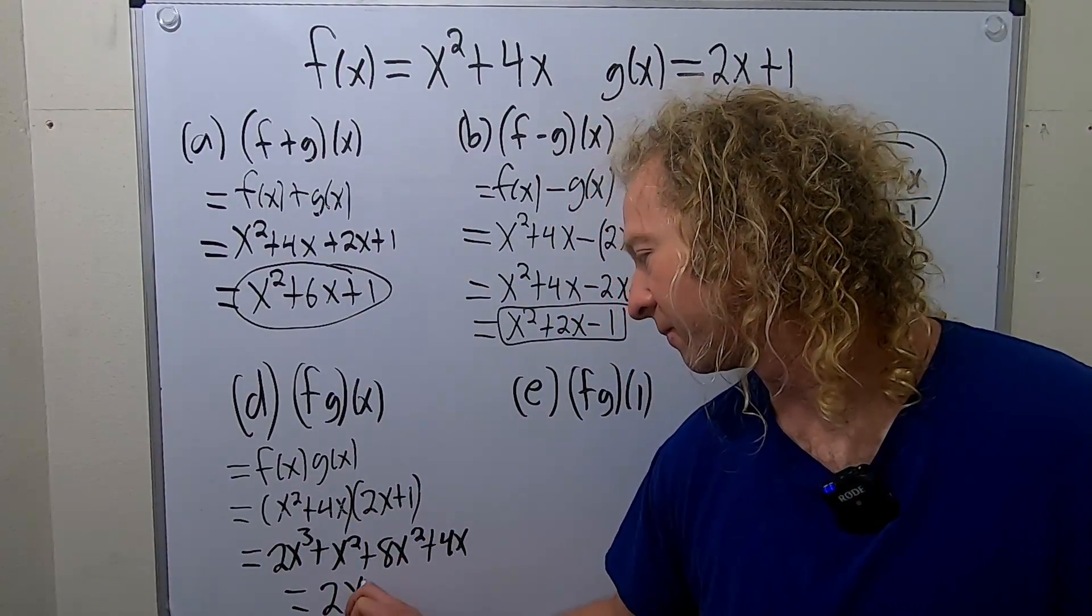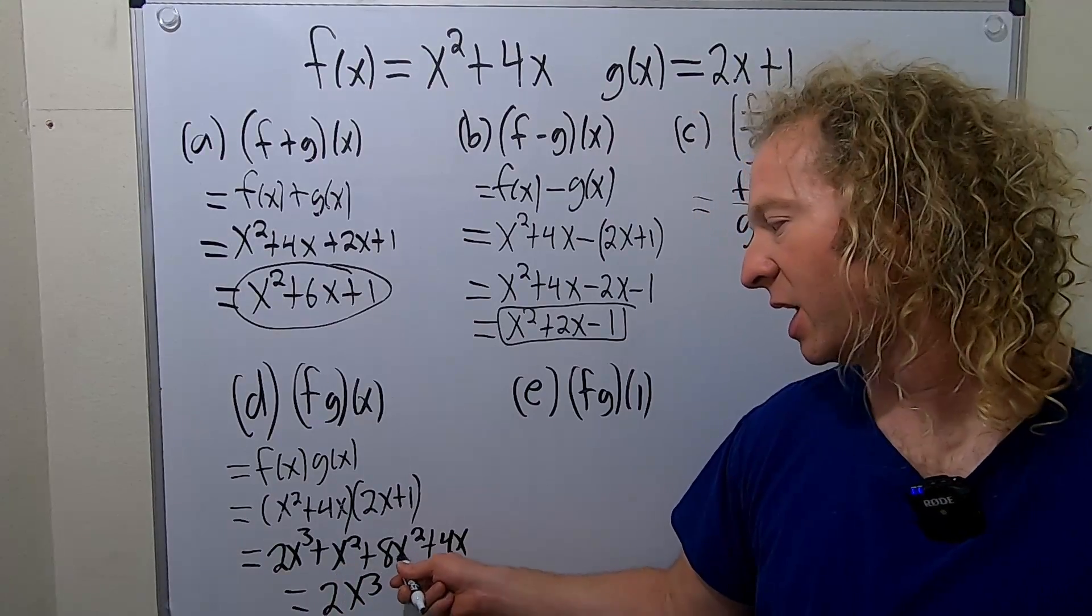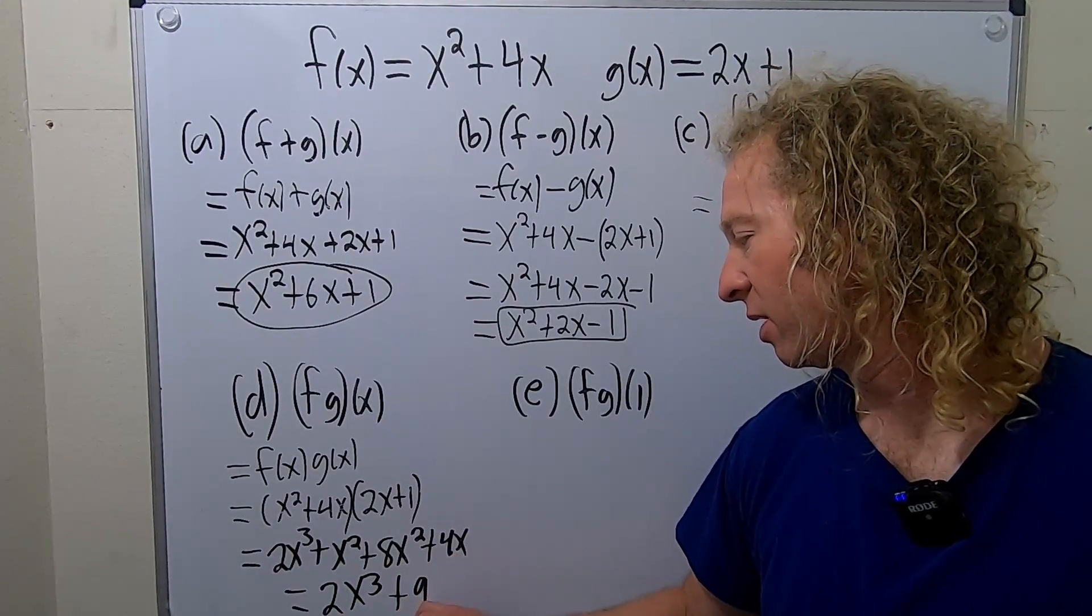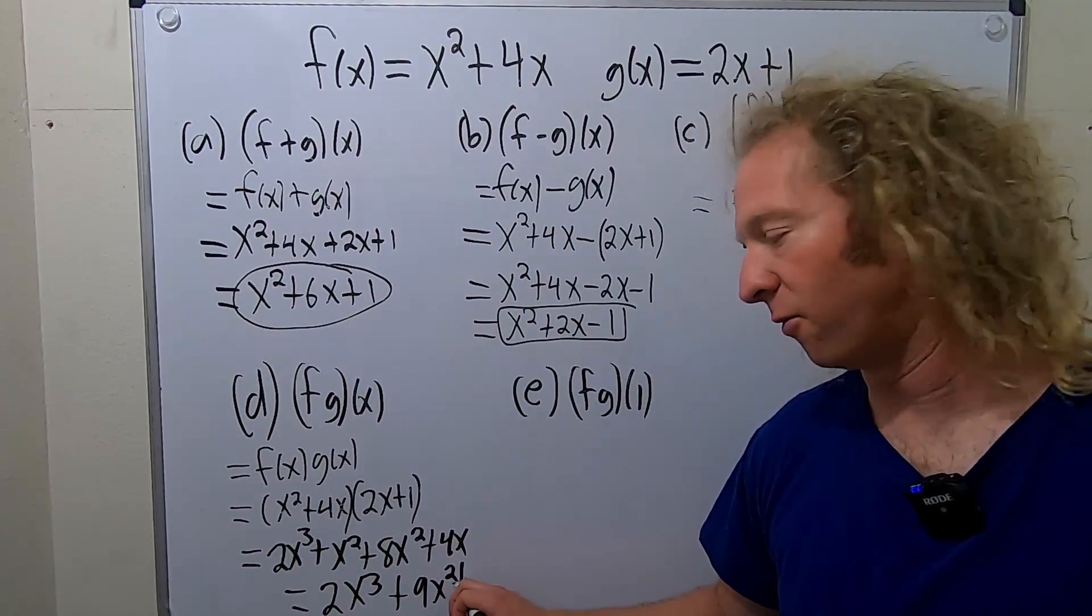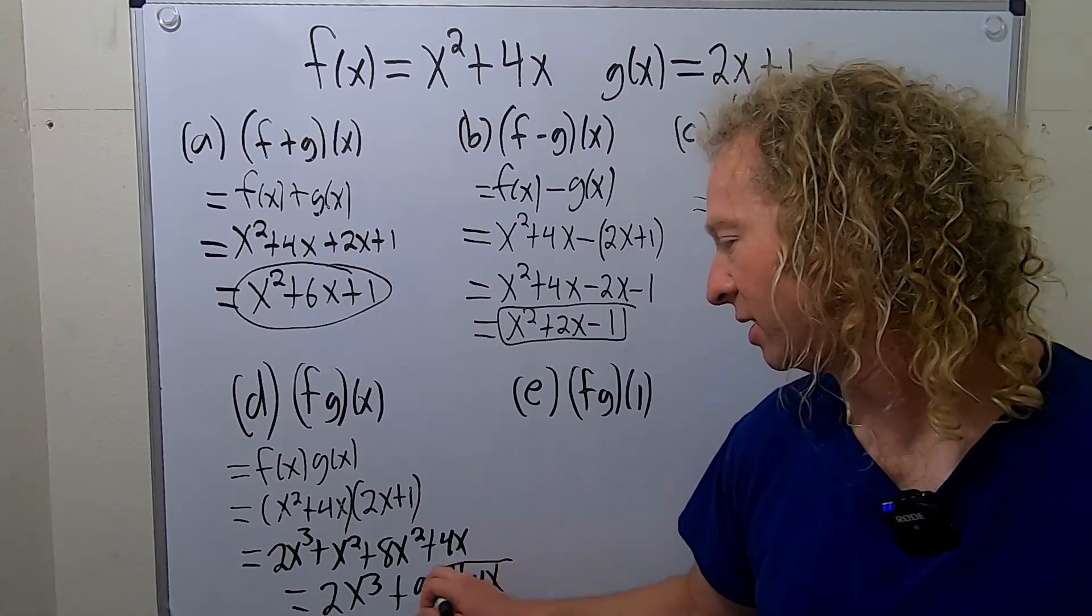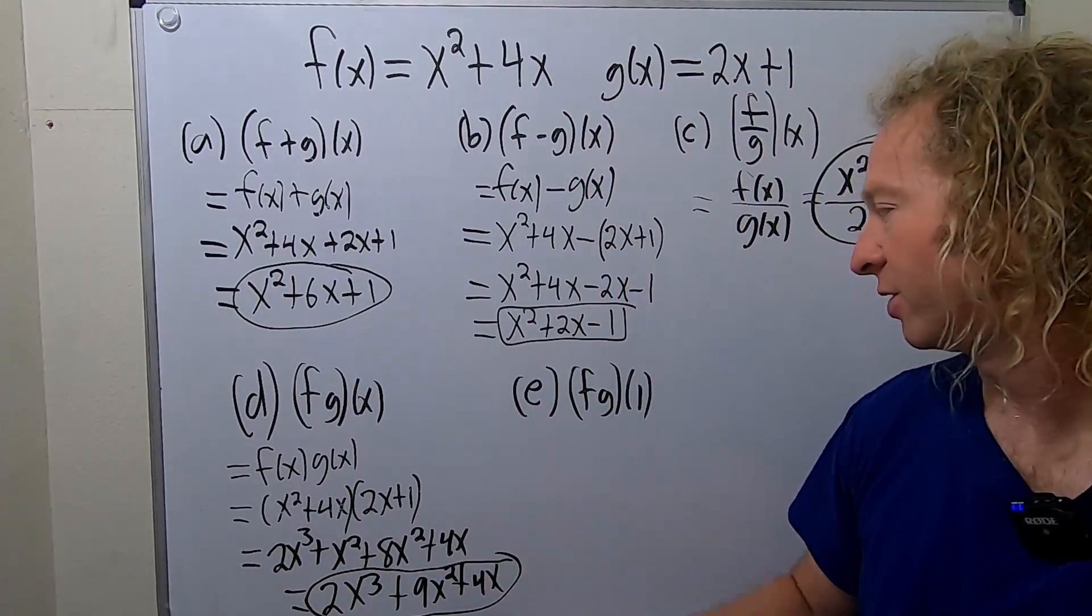And this is equal to 2x cubed. x squared plus 8x squared is 9x squared. And then we still have the 4x. Beautiful stuff. That is the multiplication of functions.